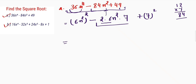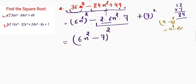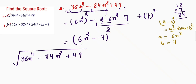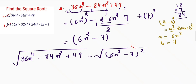So this means I can write this as 6n² minus 7 whole square. I am using the identity a minus b whole square is equal to a square minus 2ab plus b square, where a is equal to 6n² and b is equal to 7. Therefore the square root of the algebraic expression 36n⁴ minus 84n² plus 49 is equal to the square root of 6n² minus 7 whole square. The square root cancels, so the answer is 6n² minus 7.